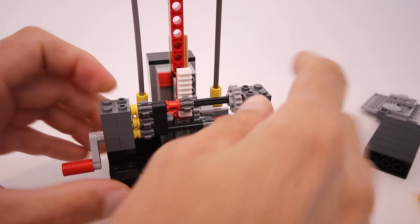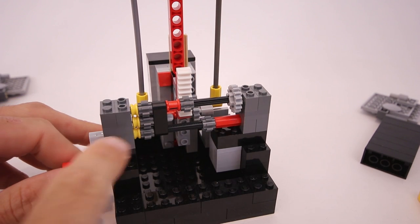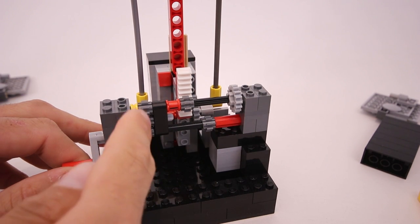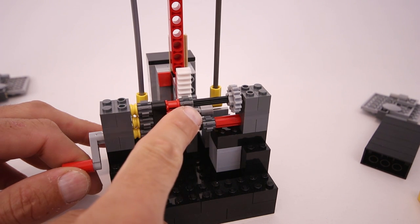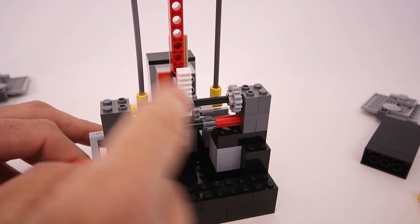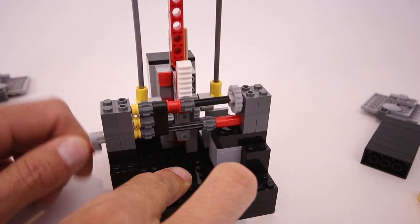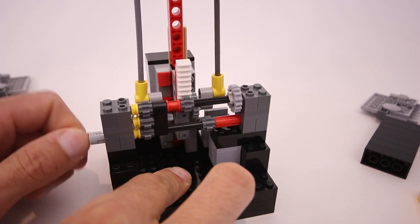So here we have the main drive system, and this crank drives the lower axle, and these three gears just transfer that rotation to the upper axle. And this eight-tooth gear meshes with the gear rack to be able to move the support up and down.